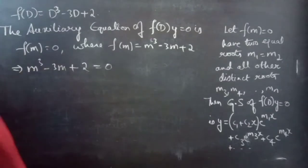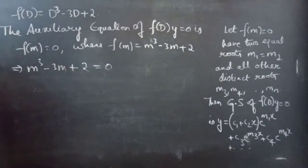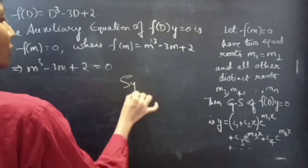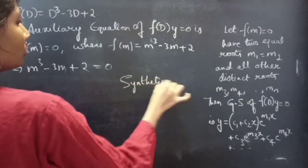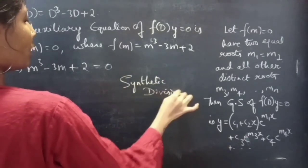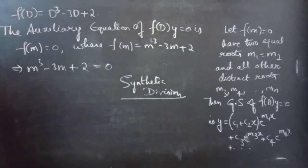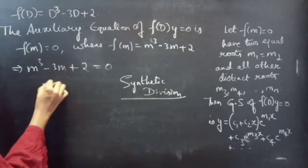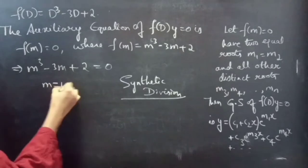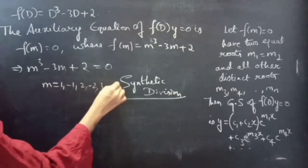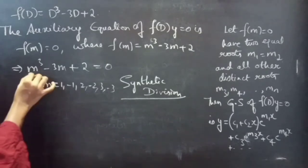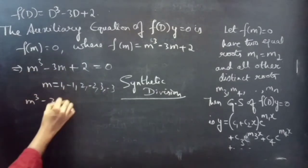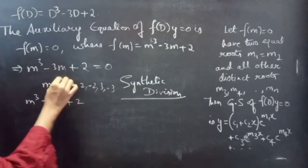We will use synthetic division method to find the roots. Firstly, we will check for m equals to 1, minus 1, 2, minus 2, 3, minus 3. Consider the polynomial m cubed minus 3m plus 2 and put m equals to 1.